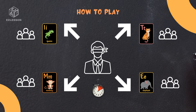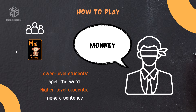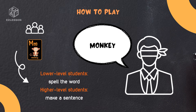After the countdown, the guesser calls out a word. Those in that corner must use the word in a sentence. For instance, if the center student says 'monkey,' students in that corner must complete a task. Teachers can decide the tasks based on students' level.